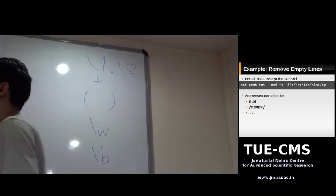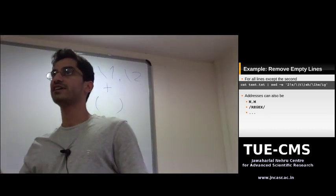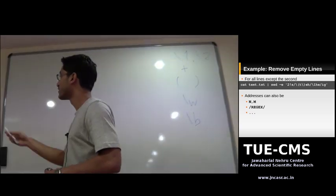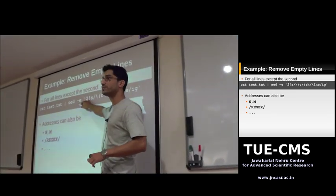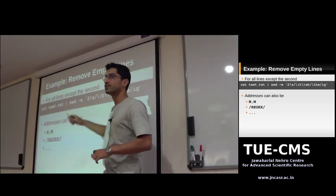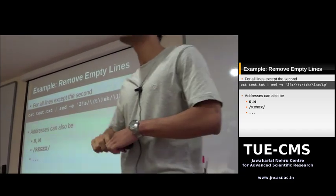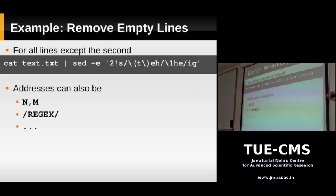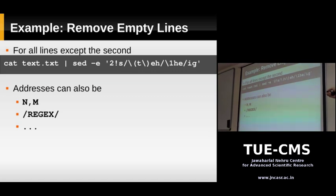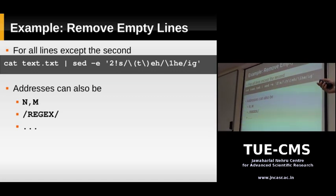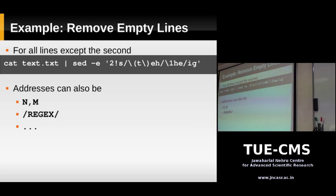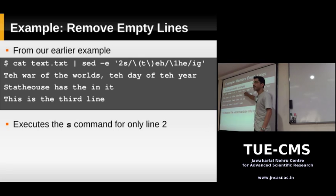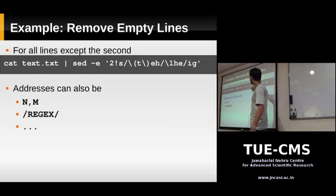We also talked about addresses for sed. We were just beginning with that before we ran out of time. Before the command you pass to sed, you give an address. That address tells sed which lines to operate on. The exclamation mark negates the address, so the previous command is run only for line 2, and this one is run for every line except line 2.